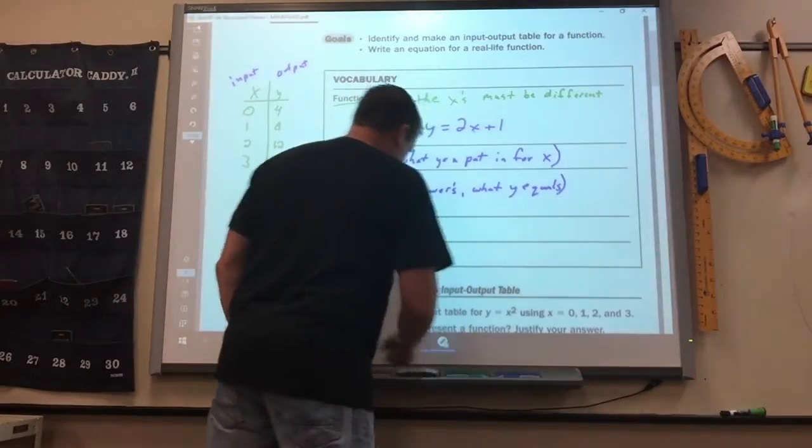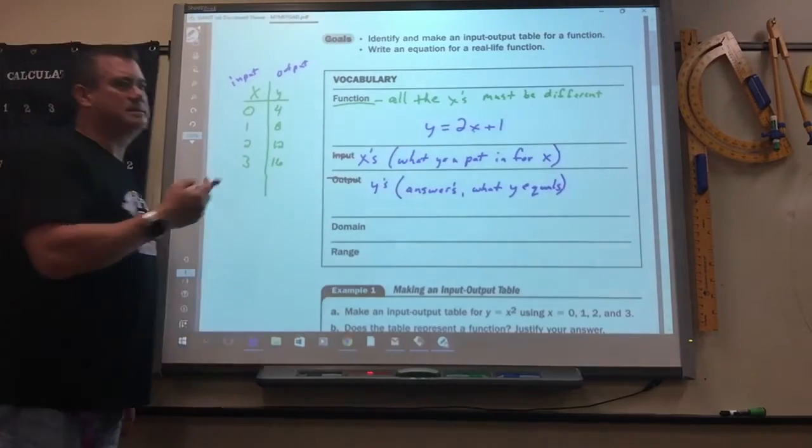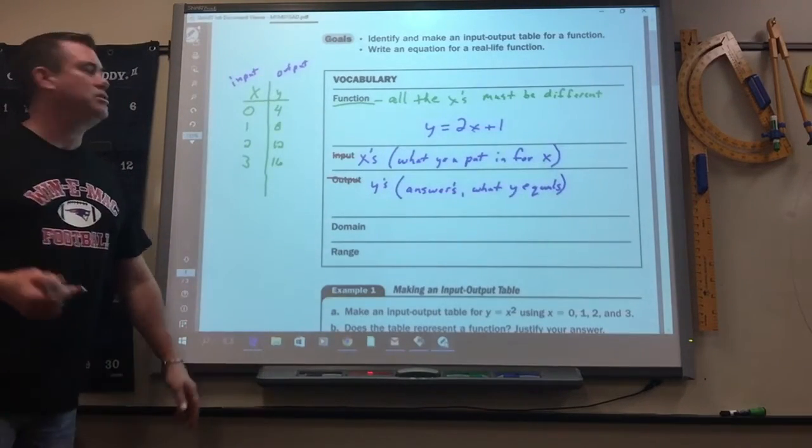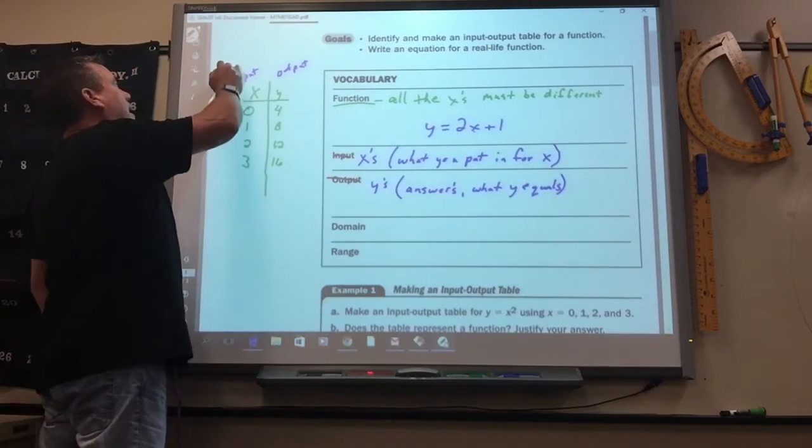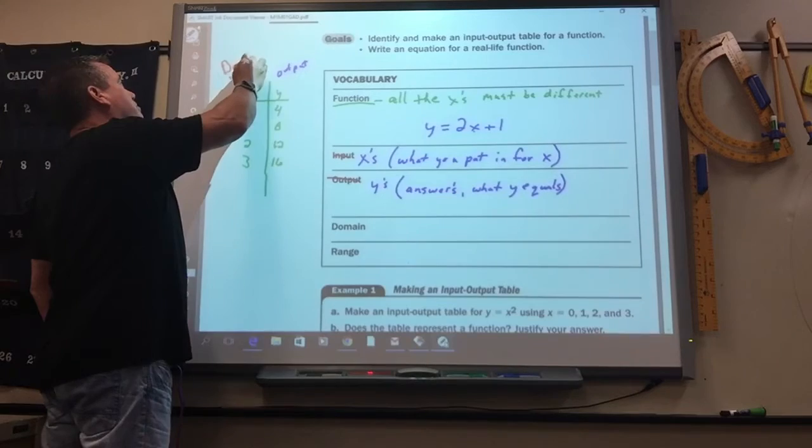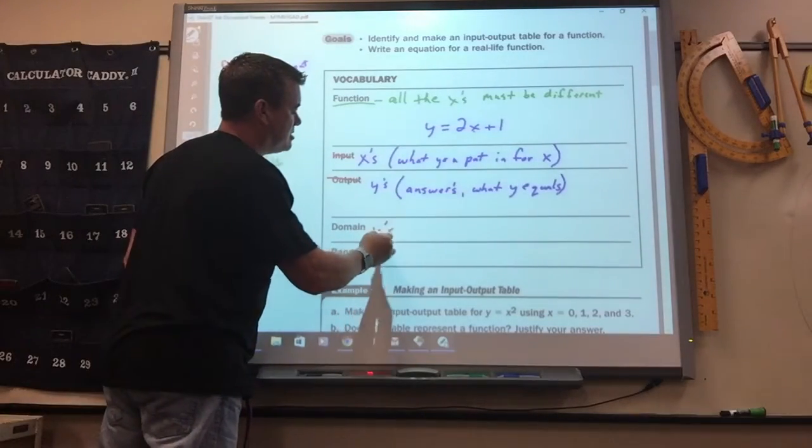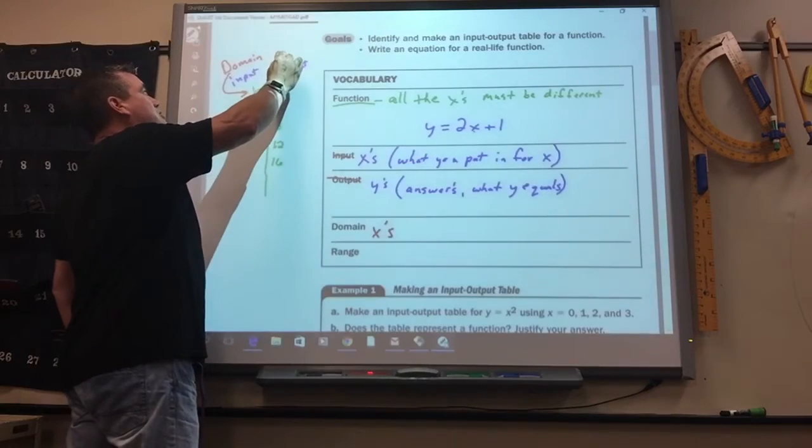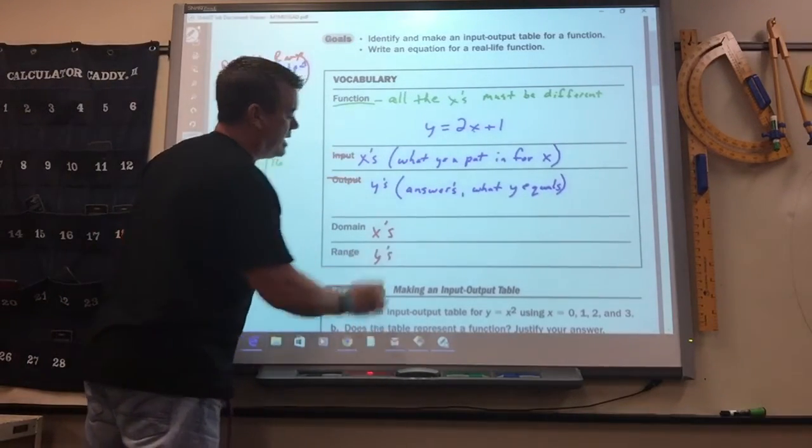Now eventually, they're not going to use these words. Later on in the book, and then when you get to algebra 2, they don't say input-output, they say domain and range. The domain is the input, which what you need to remember is the x's. The range is the output, which what you got to remember is the y's.